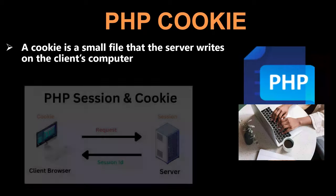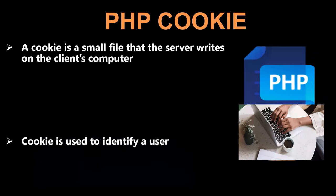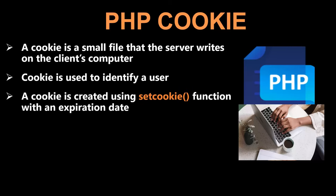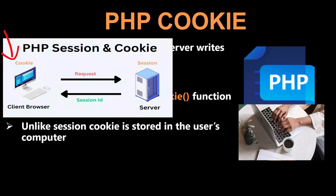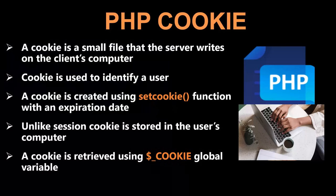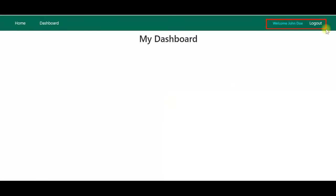A cookie is a small file that the server writes on the client's computer. Cookies are used to identify a user. We can set an expiration date for a cookie while creating it — after that, the cookie will not be valid anymore. Unlike sessions, cookies are stored in the client's computer. We will use the $_COOKIE global variable to read a cookie. With that, we will now develop a login system in PHP where we will use PHP session and cookies.